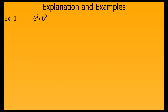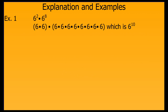Let's look at some examples. We want to simplify this expression, which is a product of two powers. I could rely on my knowledge of powers to write out what six to the second power means — six times six — and what six to the eighth power means — eight sixes multiplied together — and figure out it will be six to the tenth power. But once I know my product of powers property, it's quicker to simply keep my base six the same and add my exponents, two plus eight, to get six to the tenth.